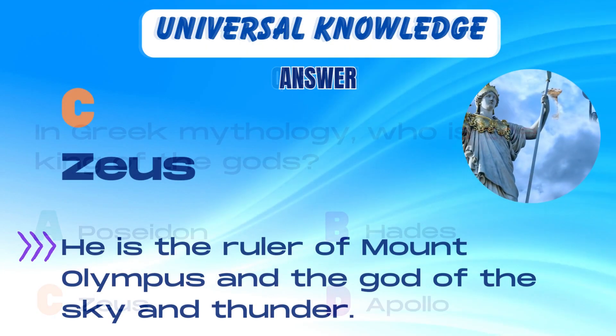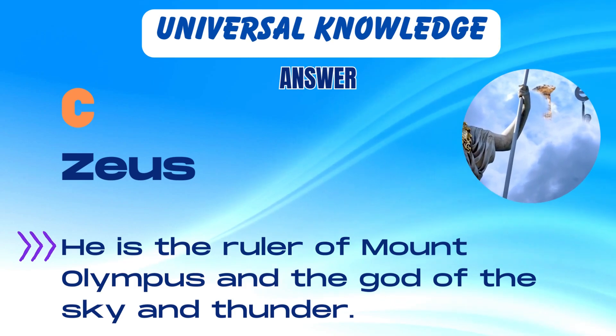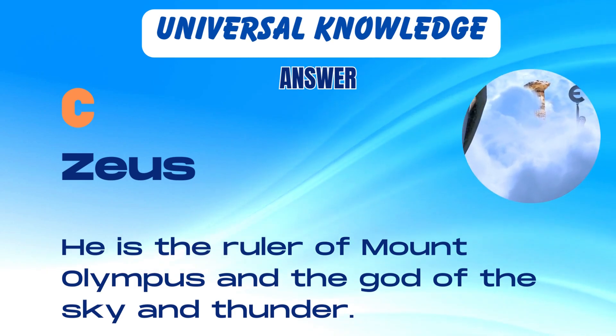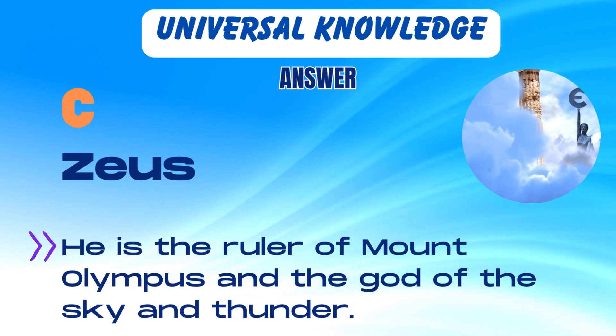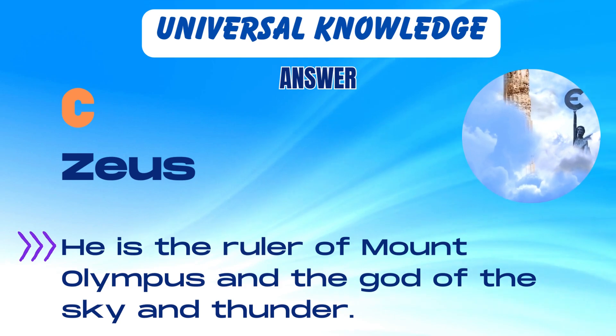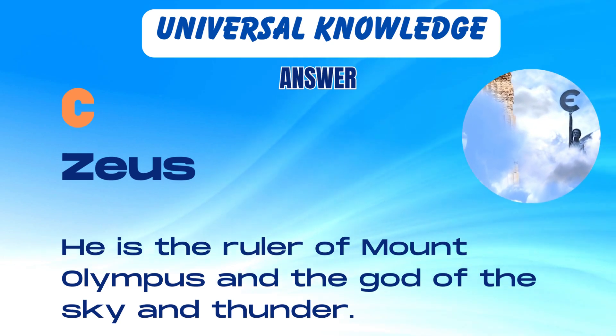The correct answer is C. Zeus. He is the ruler of Mount Olympus and the god of the sky and thunder.